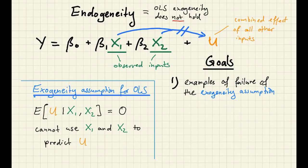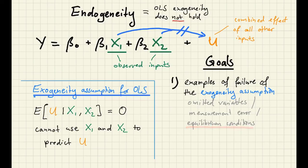In particular we're going to look at omitted variables, measurement error, and what I call equilibrium conditions. Other econometricians call this last problem the problem of simultaneous equations.